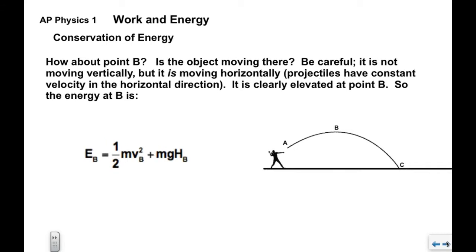When I look at point B, well, you might be tempted to think that it's not moving there. But what you remember about projectiles is that they do have constant velocity horizontally. So it will have some velocity at point B. That means we have a one half mv_b squared term. It's clearly elevated at point B above the ground. So the energy at B is one half mv_b squared plus mgh_b.